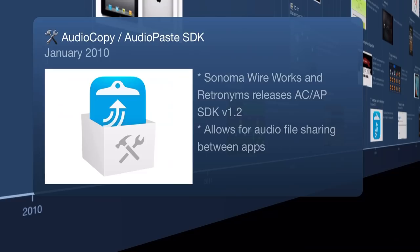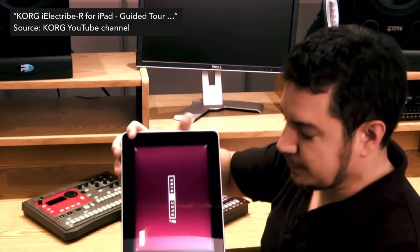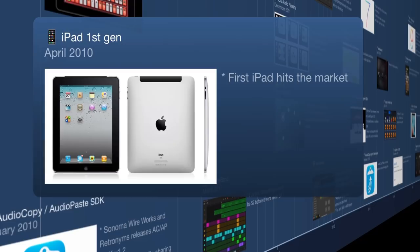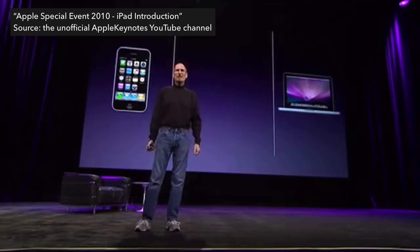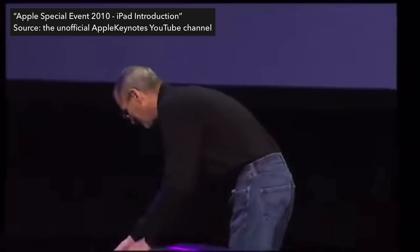Moving on, we get Korg's first iPad instrument: iElectribe, hitting the App Store in April 2010. It's significant having this huge software and hardware developer enter the iOS music app scene. This happened on the same day Apple introduced the first-generation iPad — suddenly there was this huge screen. I was still a desktop producer at the time and hadn't begun doing serious mobile music making until about 2013.